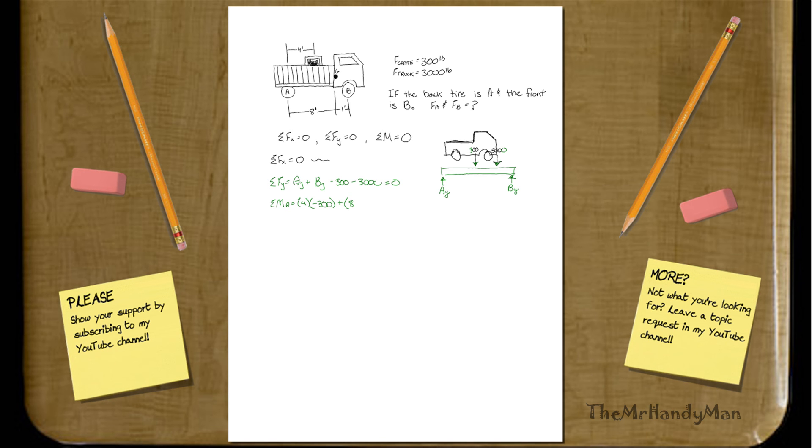You add to the next one. You have 8 feet to the centroid of the car, so minus 3,000 pounds. And then plus what seems to be 9 feet, and you add just BY in there. So that'll equal 0.